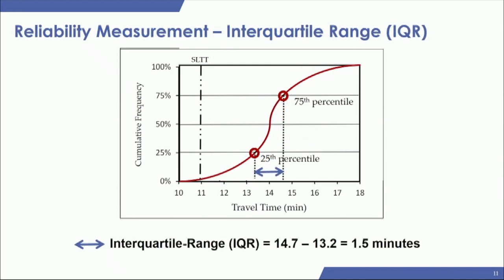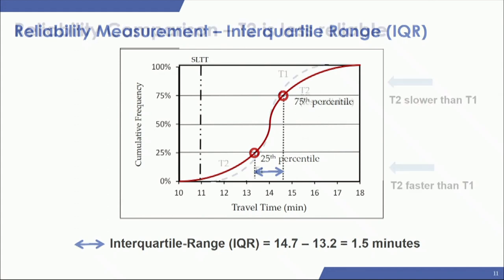The other measure using the same chart is reliability, which is related to your IQR — interquartile range. Your IQR in statistics is the spread of your distribution, in this case the spread of your travel times. To calculate it, you take your 75th percentile and subtract your 25th percentile, giving you your IQR value.